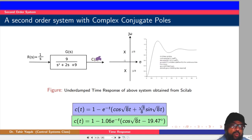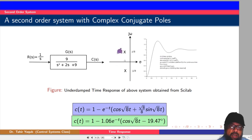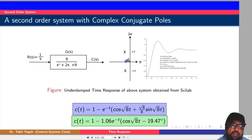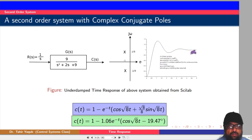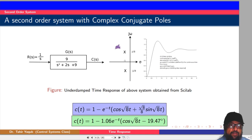The last case is when the roots have both real and imaginary components — the roots are in the left-half plane and are complex conjugates of each other. For example, the first root is minus one plus j8 and the second root is minus one minus j8. In this case the response will be underdamped, meaning the system will oscillate and finally achieve a steady value. This type of response is very important because most control systems in real life are underdamped.